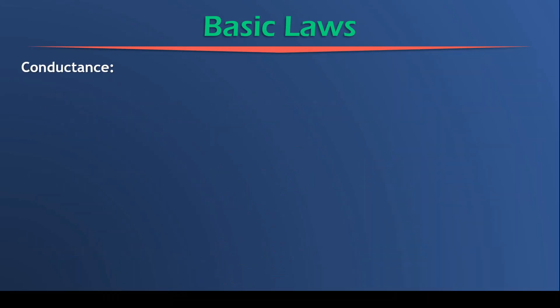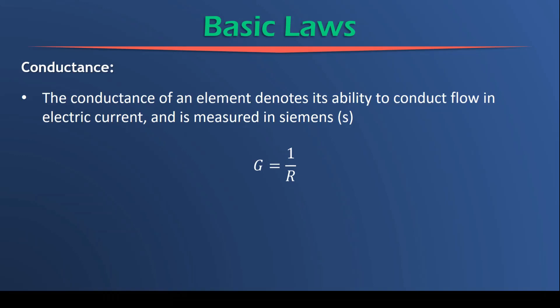What is conductance? The conductance of an element denotes its ability to conduct flowing electric current. And it is also measured in Siemens. So what's important to note here is that the relationship between conductance and resistance is such that the conductance equals the inverse of resistance, or 1 over R.